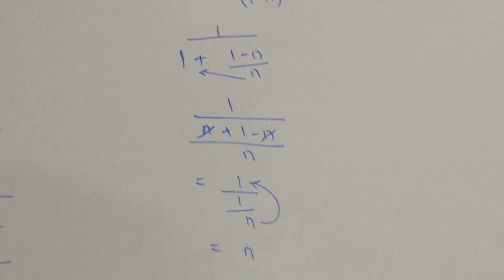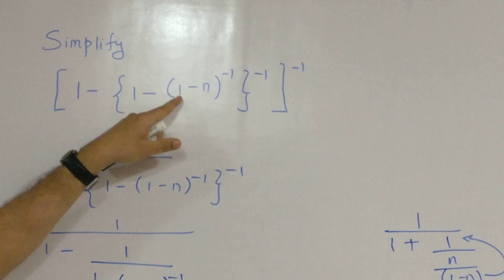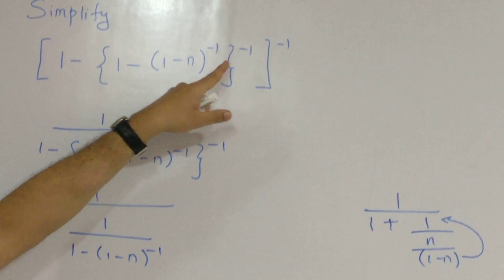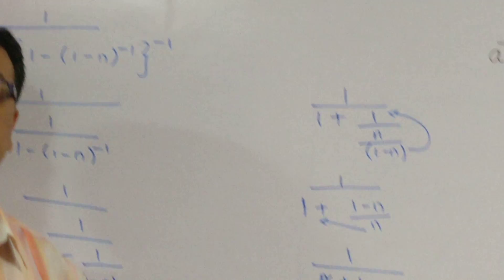So, what was our sum? Our sum was, within the box bracket, 1 minus curly bracket, 1 minus parenthesis 1 minus n, parenthesis is close, raised to minus 1. Curly bracket, close, minus 1. Box bracket, close, raised to minus 1. The final answer eventually turns out to be as n.